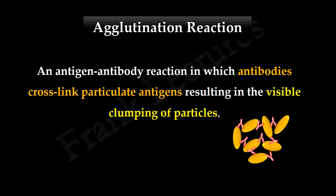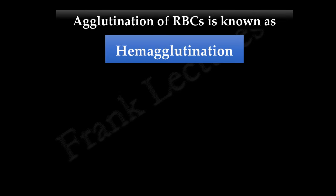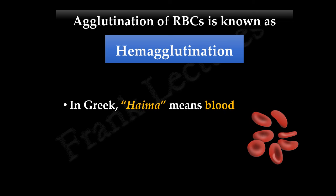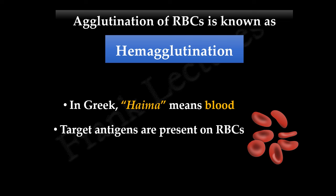Agglutination reaction is an antigen-antibody reaction in which antibodies cross-link particulate antigens, resulting in the visible clumping of particles. Agglutination of red blood cells is known as hemagglutination. In Greek, haema means blood. So hemagglutination is the clumping of red blood cells. The target antigens in this case are present on red blood cells. When specific antibodies to these antigens are added, the antigen-antibody reaction results in agglutination, which is visible as red granules.